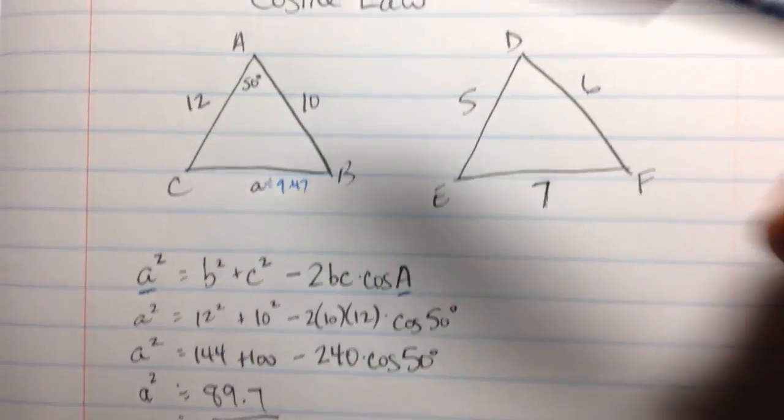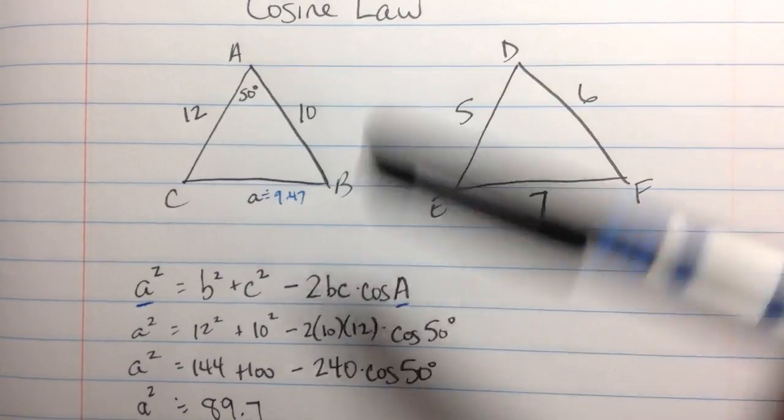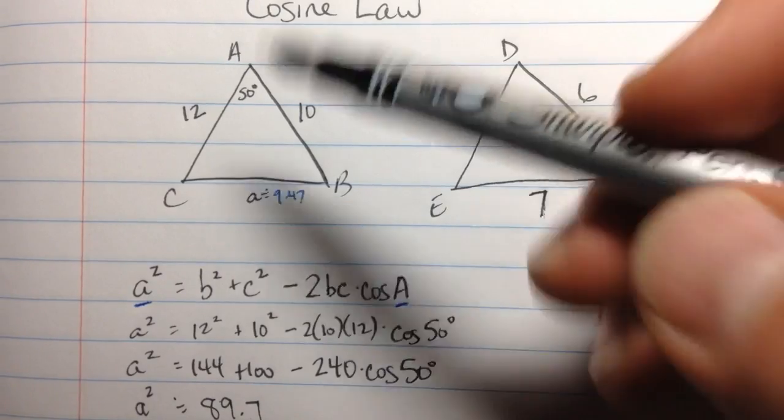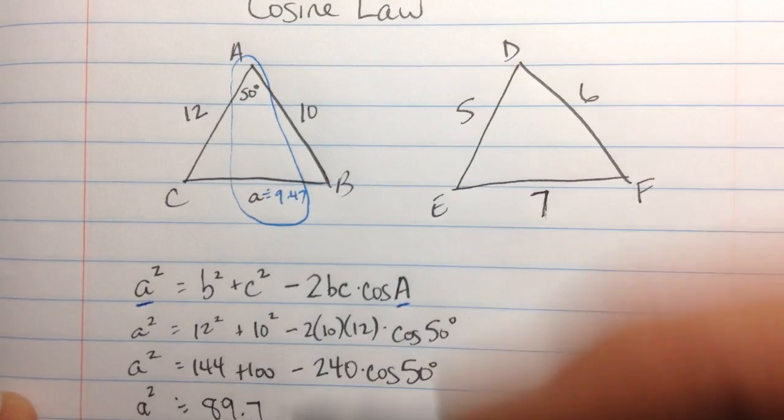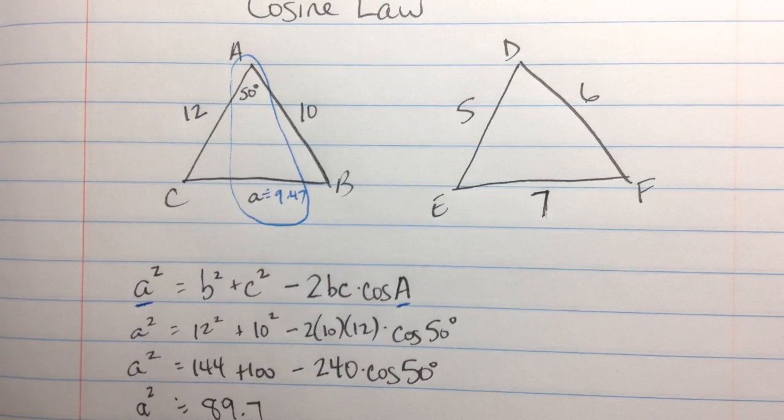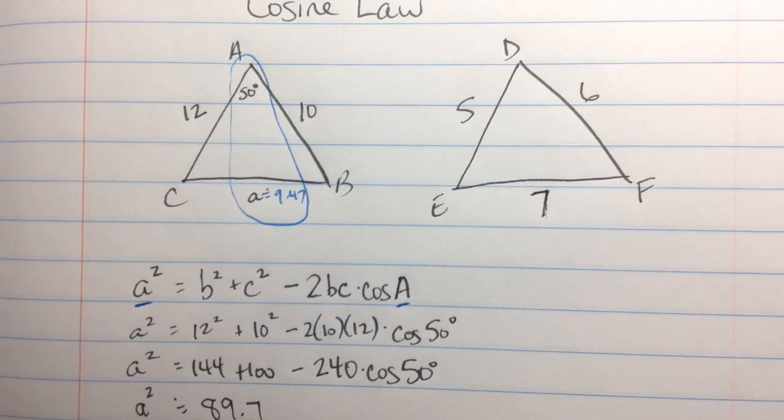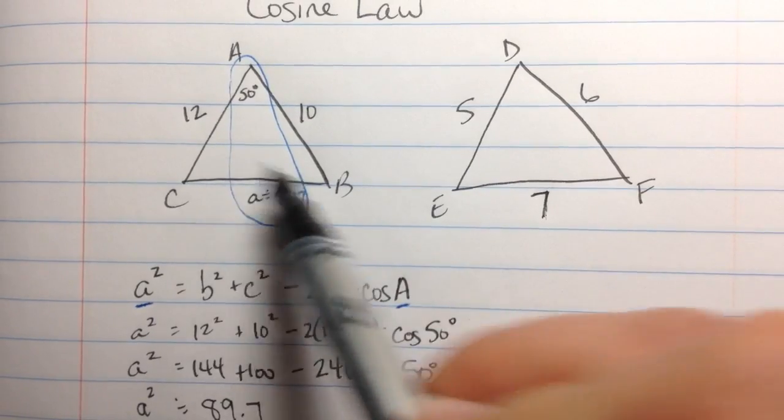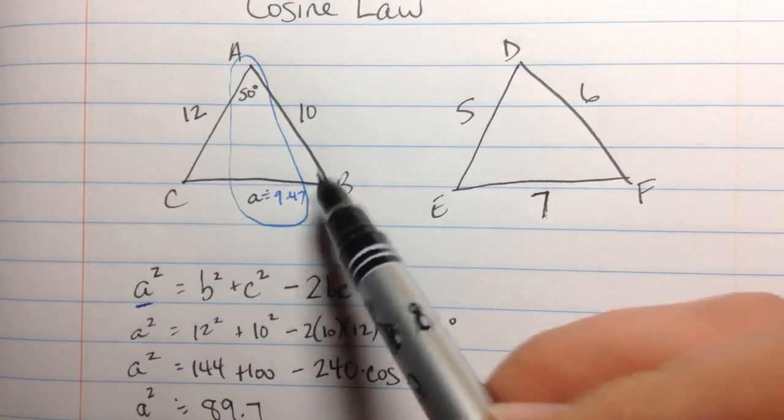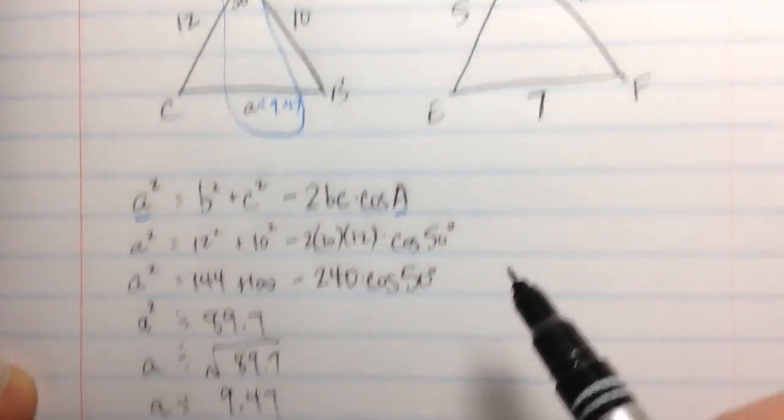Now, because we have found this remaining side here, and we already know one angle, we now have a side angle pair right here. A and little a. And so now we can use the sine law. We'll use the sine law to find either one of the remaining angles. It doesn't matter which one. Let's pick B as an example.